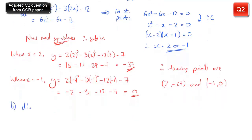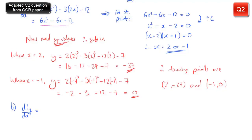For part b, I'm asked to find the second derivative d²y/dx². Taking the expression for dy/dx and differentiating: 6x squared becomes 6 lots of 2x, and minus 6x differentiates to minus 6. So d²y/dx² equals 12x minus 6.